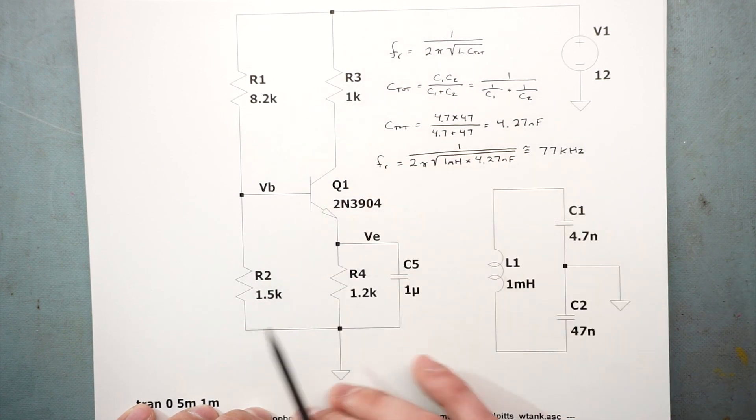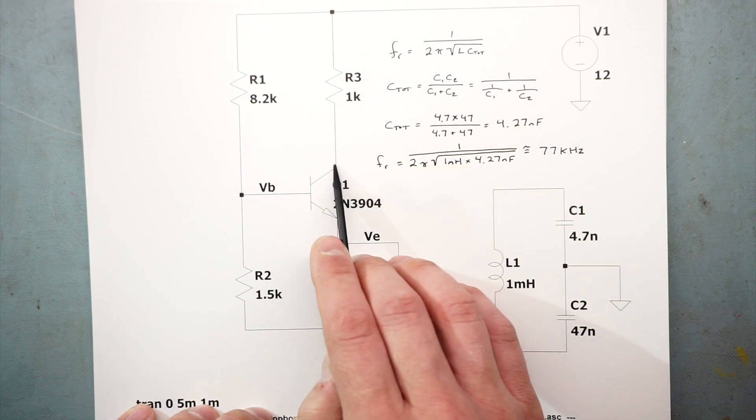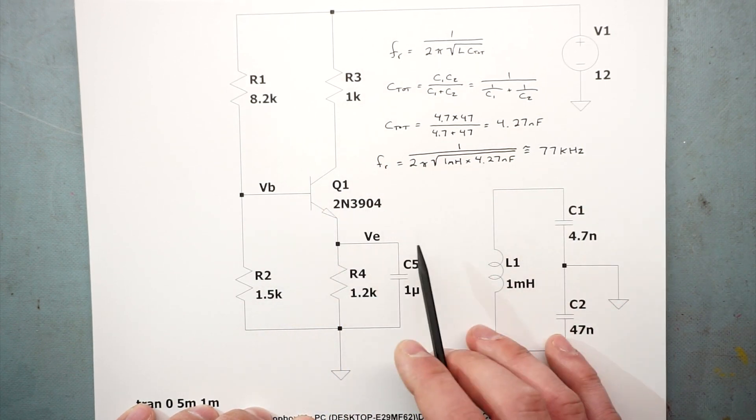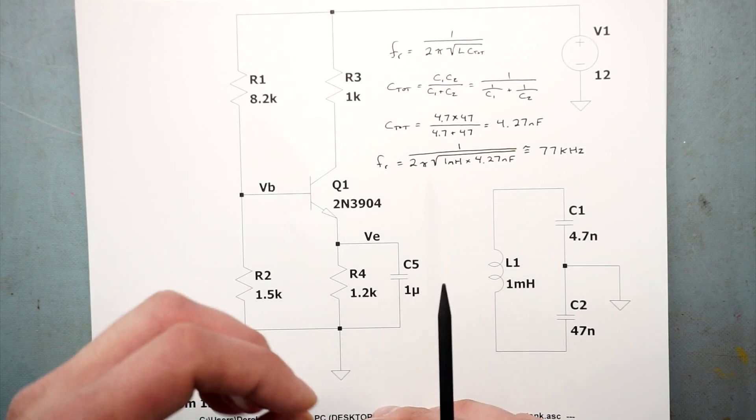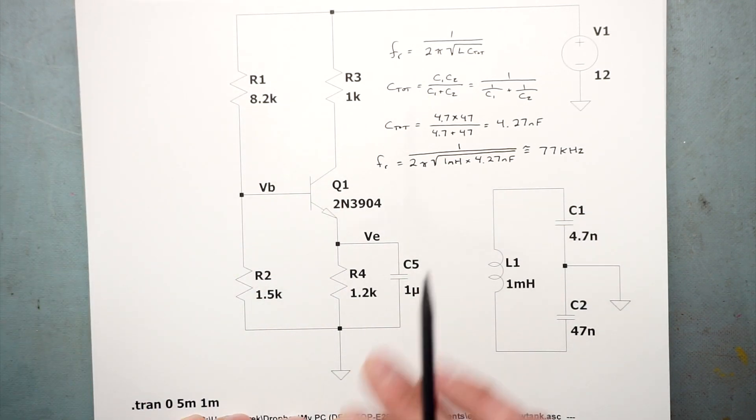When we first initially turn on the power supply, this is going to provide a little pulse of energy to our circuit and it's going to start oscillating. Actually, it kind of gradually increases. Now let's move on and see what happens when we connect everything together.